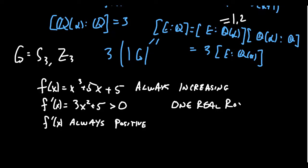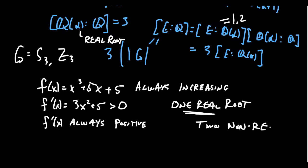For different cubic polynomials you could have three real roots, but here we have exactly one real root — that follows from the intermediate value theorem giving the first real root, and the mean value theorem ruling out a second. By the fundamental theorem of algebra, this polynomial has three roots total. Since there is only one real root, the other two roots are non-real complex roots, which come in conjugate pairs by the fundamental theorem of algebra. Let α be the single real root, and call the two non-real roots β and β̄.